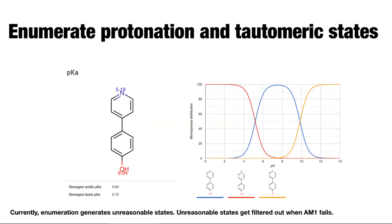Currently I'm using OpenEye to enumerate these states, which does introduce some unreasonable states. Because of the way the torsion pipeline works, we do an AM1 calculation which filters out many of the unreasonable states, though it's a pretty expensive filter. We're working with Marcus Wieder at a postdoctoral lab on a more efficient way of generating reasonable protomer states.